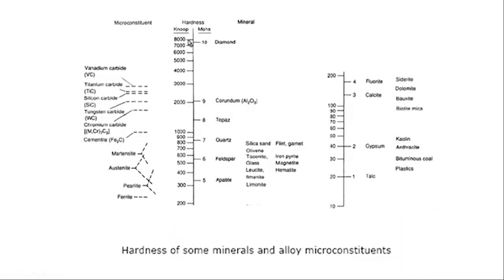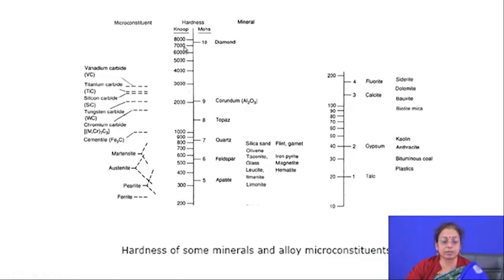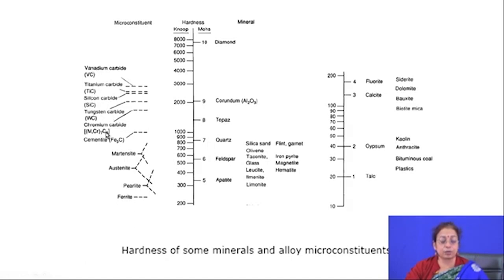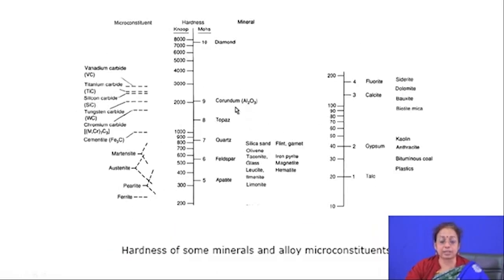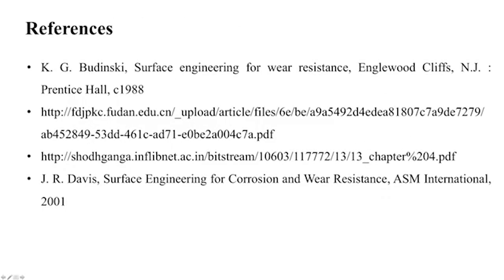For hardness enhancement, different compounds and materials are available. You can directly form them on the surface by different treatments or use physical or chemical vapor deposition processes to develop a hard layer. If you know the component and the application, you can easily choose the appropriate technique and improve wear resistance to a large extent. In the next talk, we will discuss erosive wear and surface fatigue modes in detail.